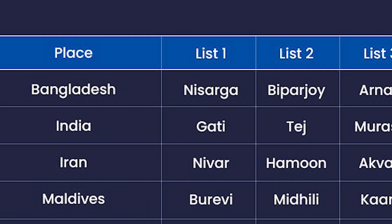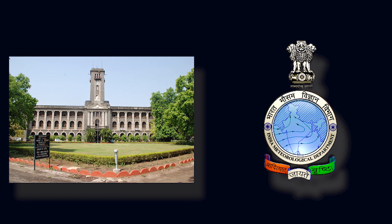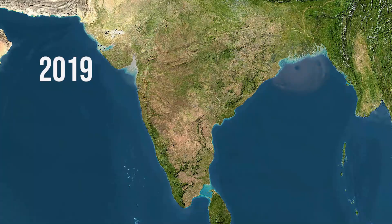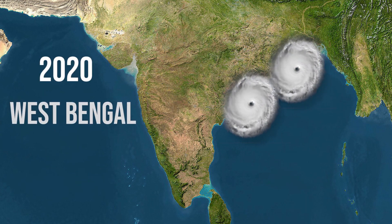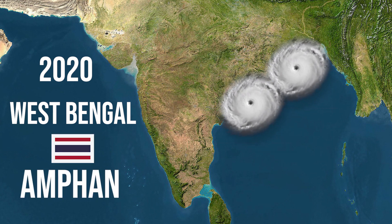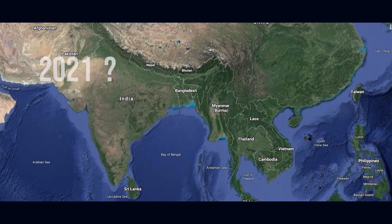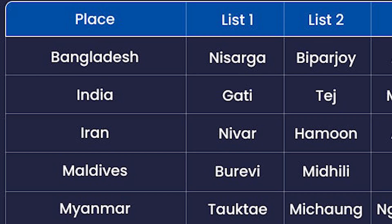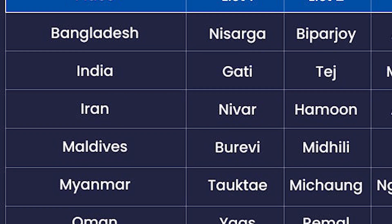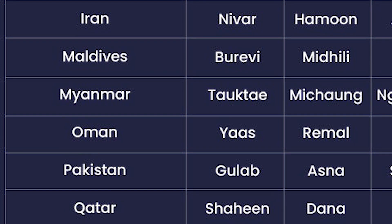2004 ke formula ke mutabiq in sab deshon ko alphabetical order mein rakh kar, sab se cyclone ke liye naam maange jaate hain. India ne cyclone ke liye 169 naam de diye hain. Naam dene ki zimmedari India mein Indian Meteorological Department ke paas hai. Jaise ki 2019 mein West Bengal mein aaye cyclone ko Pakistan ne 'Bulbul' naam diya tha. 2020 mein Odisha aur West Bengal mein aaye cyclone ko Thailand ne 'Amphan' naam diya tha. Aur haali mein Maharashtra mein aaye cyclone ko Bangladesh ne 'Nisarga' naam diya tha. Iska matlab yeh hai ki jab North Indian Ocean mein agla cyclone aayega tab usse India naam dega, woh naam 'Gati' hai. Aur is tarah hum kuch aane wale toofanon ke naam bhi bata sakte hain — jaise Gati jo India dega, Nirav jo Iran dega, Burevi jo Maldives ne diya hai, Tauktae jo Myanmar dega, aur Yaas jo Oman ne diya hai.